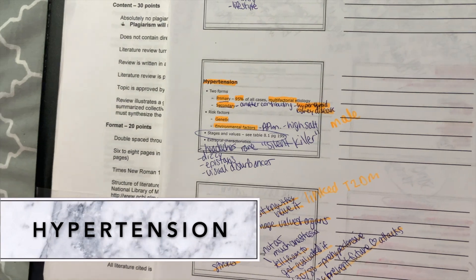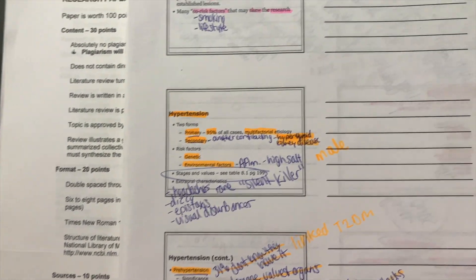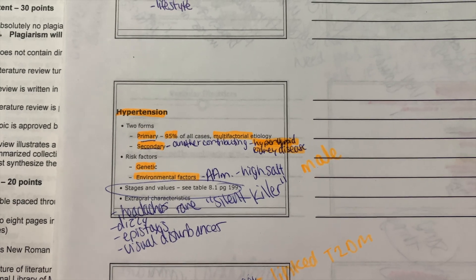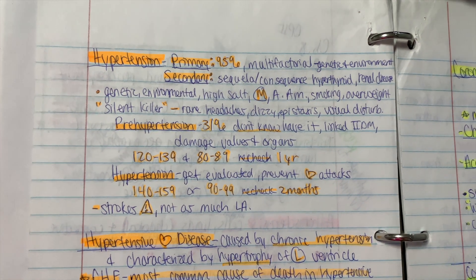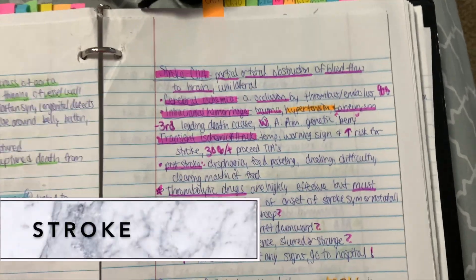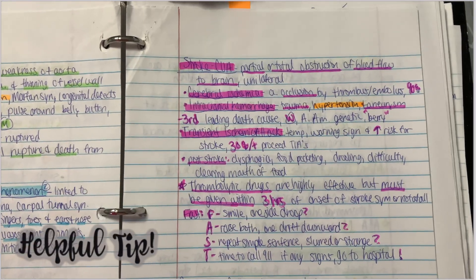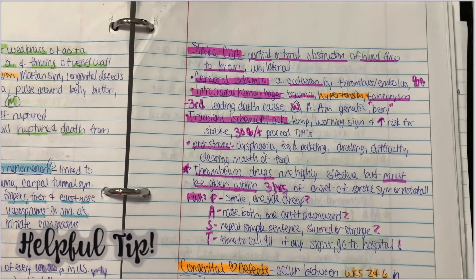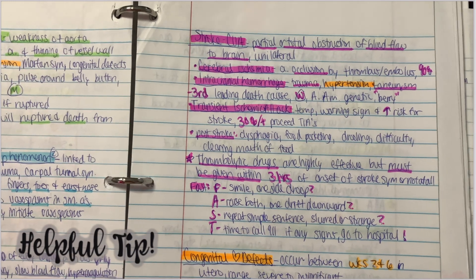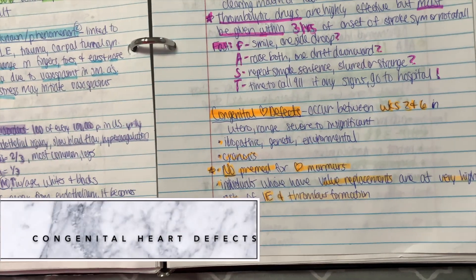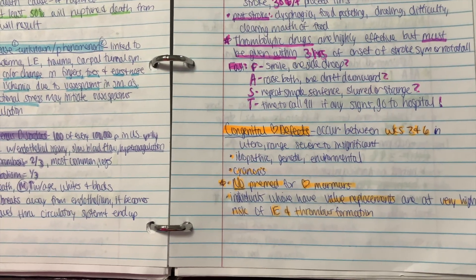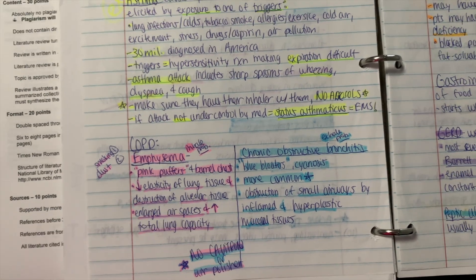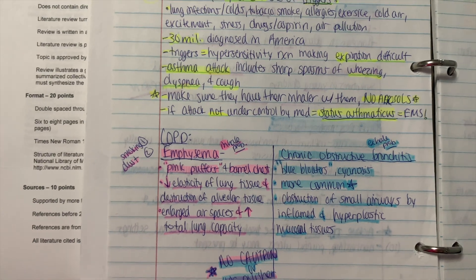Hypertension — taking blood pressure on patients before treatment is not currently required for dental hygienists but is highly recommended. High blood pressure is known as the silent killer. If a patient is going to have a stroke, remember FAST: F — have them smile, is one side drooping? A — raise both arms, is one drifting downward? S — have them repeat simple sentences, is it slurred or strange? T — if those are occurring, call 9-1-1. Congenital heart defects occur between weeks two and six of development. There are currently no pre-medication requirements for a patient with a heart murmur. For a patient with asthma or COPD, do not use any aerosols — no air polisher and no Cavitron.